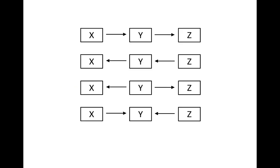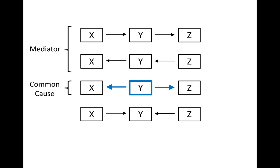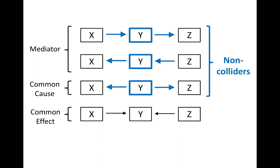In general, there are four possible arrangements for a variable Y on a path. Y can be a mediator, or Y can be a common cause on the path, or Y can be a common effect on the path. Mediators and common causes are non-colliders, and common effects are colliders.